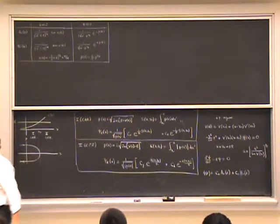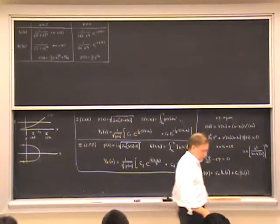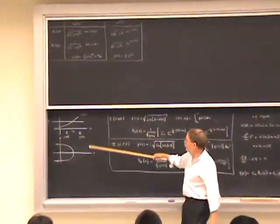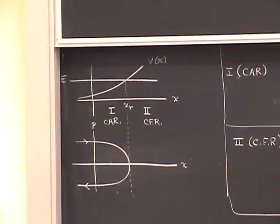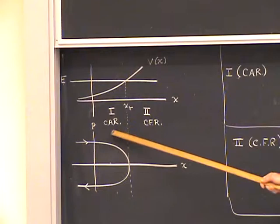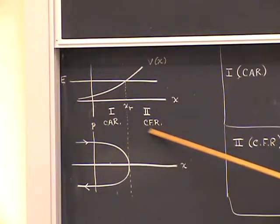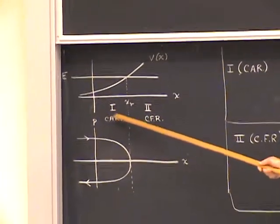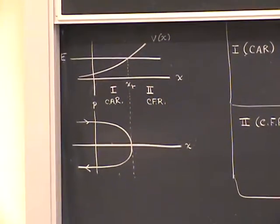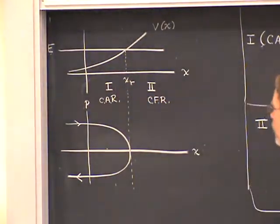I want to remind you where we are. We're in the thick of a bunch of stuff here, so I've summarized on the board. We're considering a case in which there is a potential that's rising to the right, so that there's a classically allowed region to the left of the turning point and a classically forbidden region, CFR, to the right. These are also labeled 1 and 2. XR here is the turning point itself, and the R just means that this turning point is to the right of the classically allowed region.